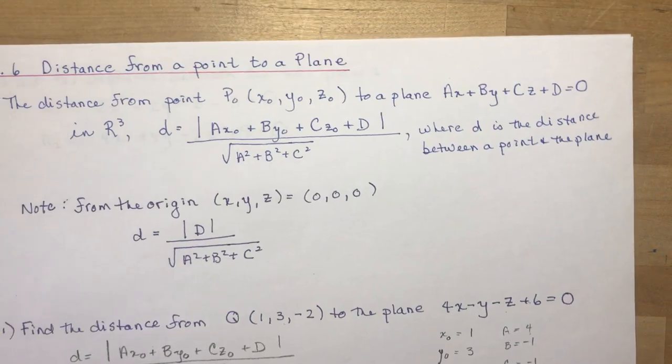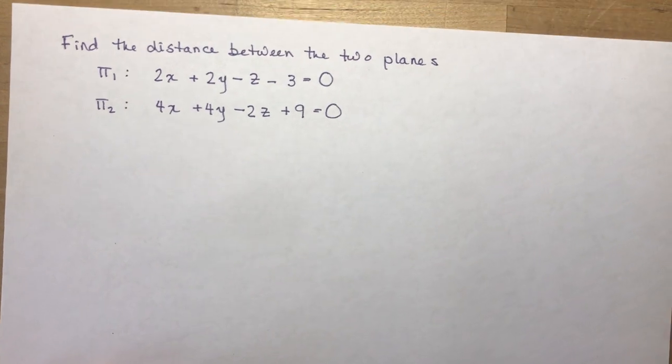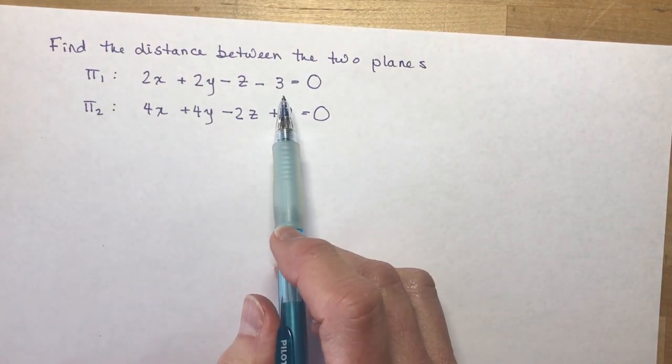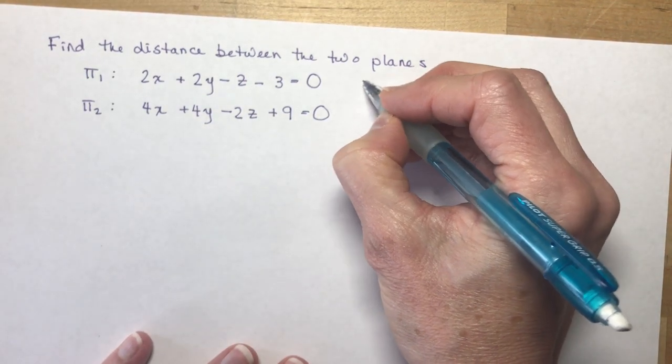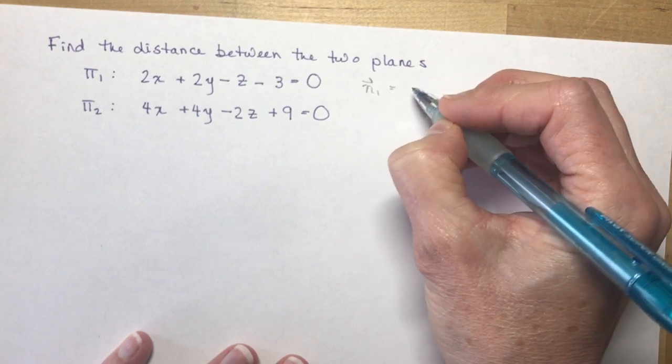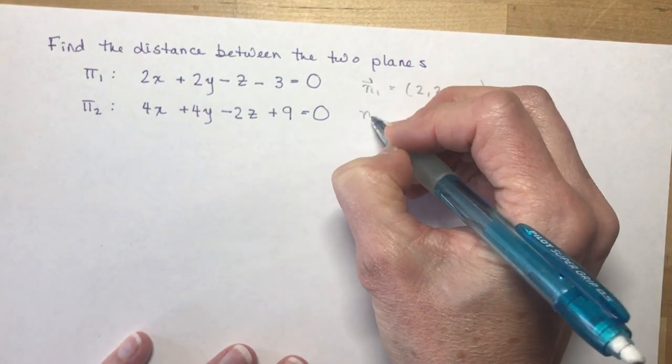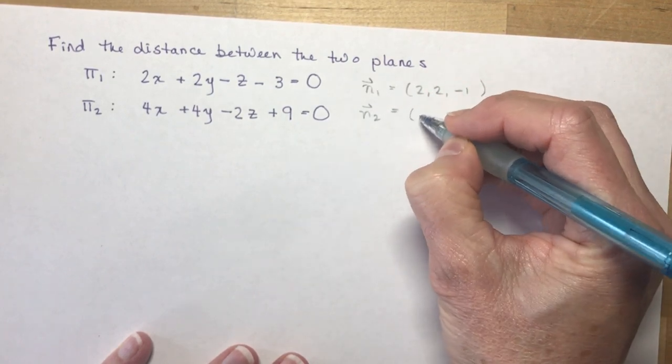Okay, so the last one I'm going to do is to find the distance between two planes. So I have my planes written out here. And the first thing I want to do is check the normals. So the normal for this plane is going to be 2, 2, -1. And the second normal here is going to be 4, 4, -2.